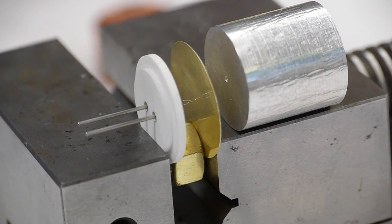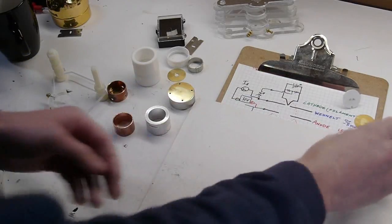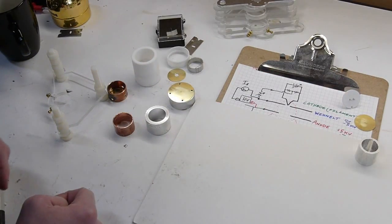We'll talk about that, and then there's a fair bit of space between the Wenelt and the anode. So I'll put these out and talk about what kind of voltages are on these.